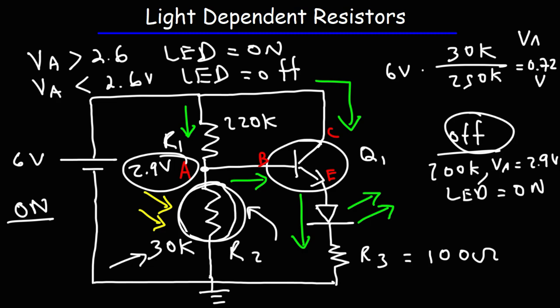Once the transistor is activated, a larger amount of current flows from the collector to the emitter, turning the green LED on. The voltage at point A controls the transistor — if it's greater than 2.6 volts, the transistor is activated. A very small base-to-emitter current activates a larger collector-to-emitter current. That's also why I chose R1 to be so high — you don't want too much current flowing through the base of the transistor, otherwise it can burn out.